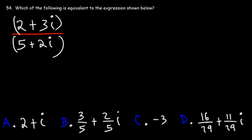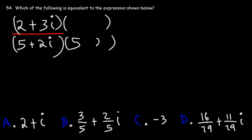Problem 54: Which of the following is equivalent to the expression shown below? In this problem we are dividing two complex numbers — dividing 2 plus 3i by 5 plus 2i. In order to simplify this expression, we need to multiply the top and the bottom by the conjugate of the denominator. The conjugate has a 5 and a 2i, but instead of the positive sign we use a negative sign. Now we want to FOIL.